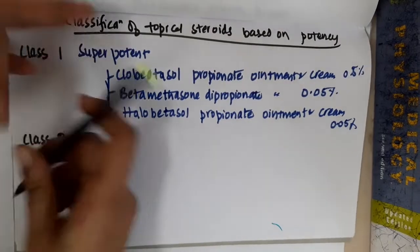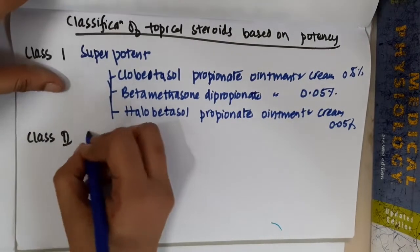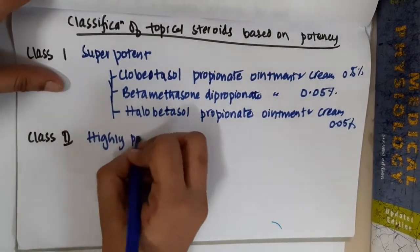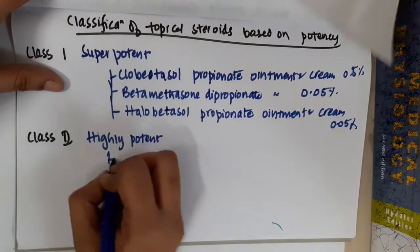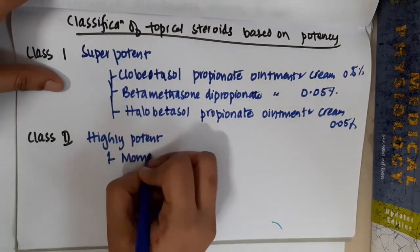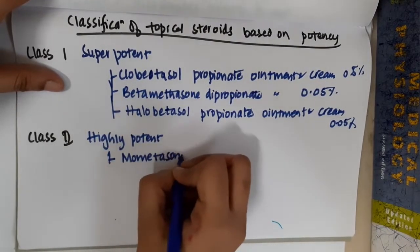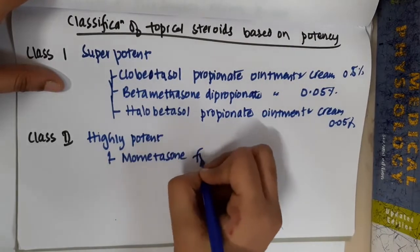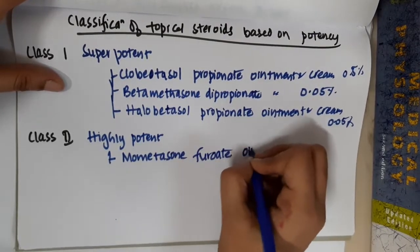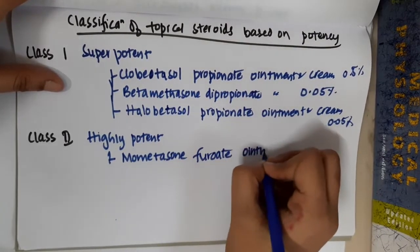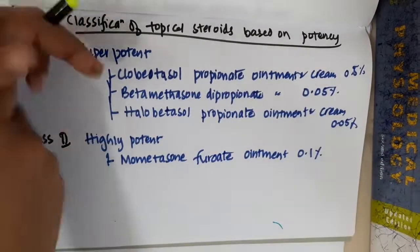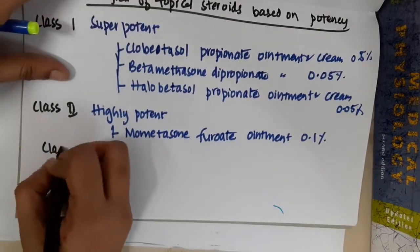Class 2 is highly potent. This includes mometasone furoate ointment which is 0.1%.